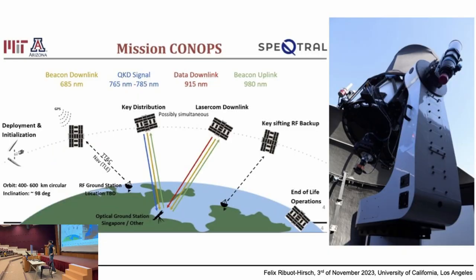The next step is to have communication with the ground. You have a laser shining photons down to the ground as the satellite passes by. On the right you have a telescope trying to capture these photons. Once again, you're sending photons one by one, so you need to be able to detect one photon at a time. Currently it works only at nighttime when there's no moon. But it's still working — we can send about 10 kilobits of secure keys every time the satellite passes.